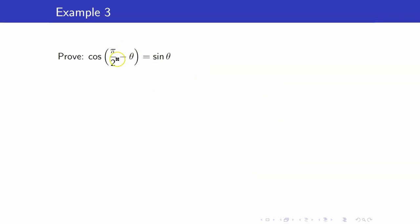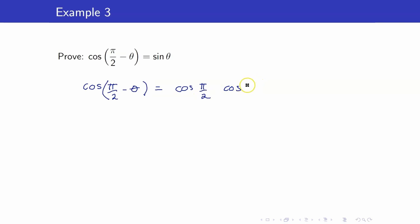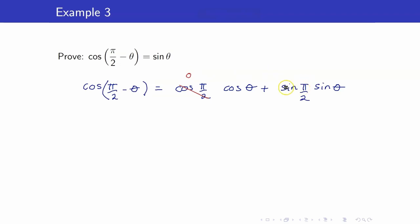Next, let us prove that cosine(π/2 − θ) equals sine θ. This is our complementary angle theorem. Starting with the left-hand side and using our identity: cosine(π/2)·cosine(θ) plus sine(π/2)·sine(θ). Cosine of π/2 is 0, and sine of π/2 is 1. Therefore, we get 1 times sine θ, which gives us sine θ. The left-hand side equals the right-hand side.